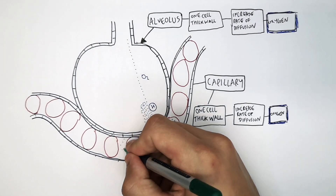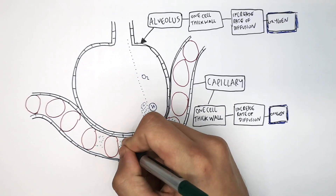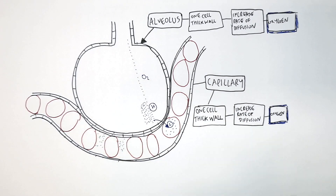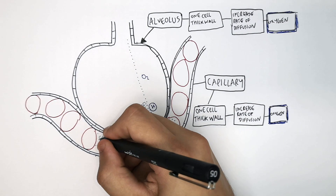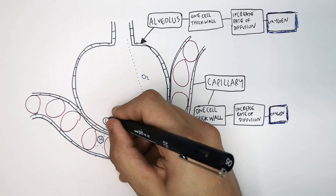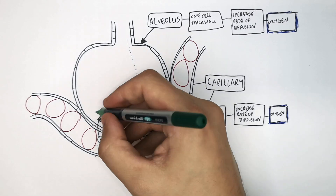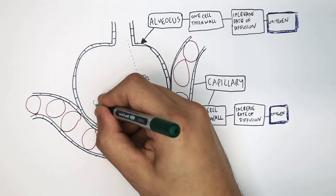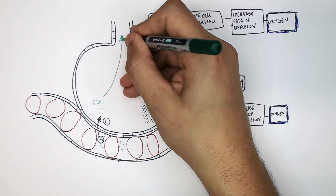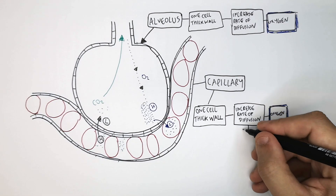And carbon dioxide dissolved in the plasma of the blood is going to be in a high concentration in the capillaries — in the blood of the capillaries. So the CO2 will then diffuse from a high to low concentration from the blood in the capillaries to the air sac, the alveoli. The CO2 will then diffuse out of the alveoli and out of our body through our nose or mouth.